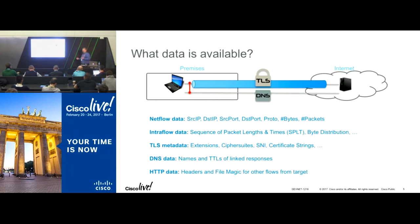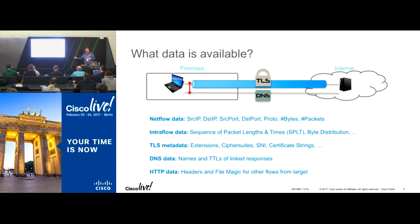So what data is available? With encrypted traffic, before the data goes encrypted and the stream becomes unreadable, there's a lot of things that are readable that we can get information about. NetFlow or IntraFlow data tells you source and destination addresses and the number of bytes in a packet. TLS metadata — the client-server hello exchange, the key exchanges — all of those are very easily seen in packet flows and can give you very good information about what's going to happen in the encrypted stream before the payload actually starts going encrypted.